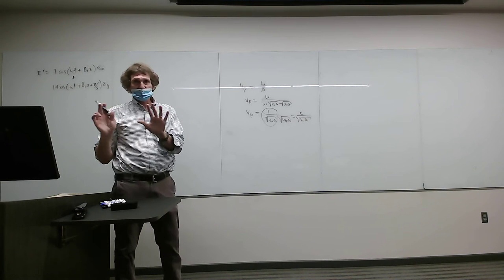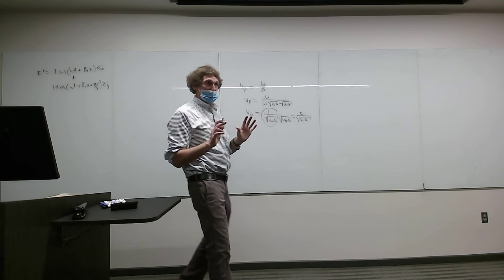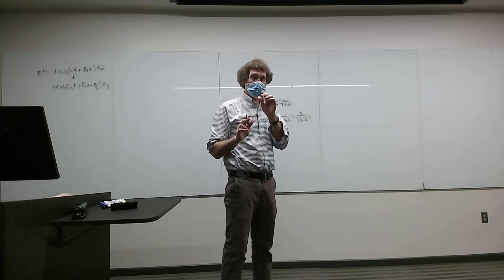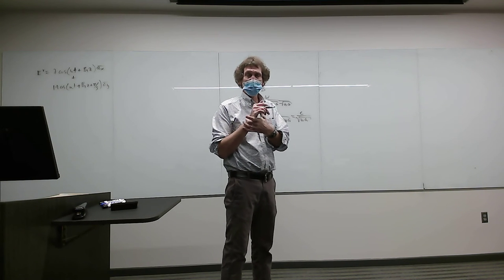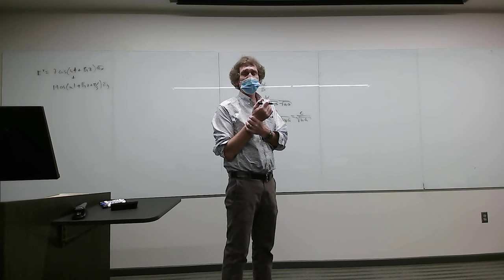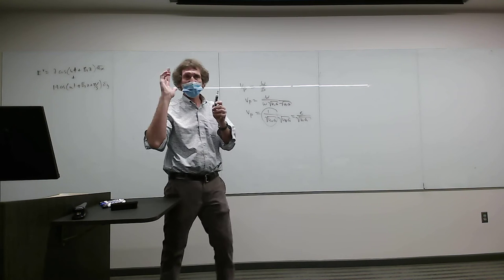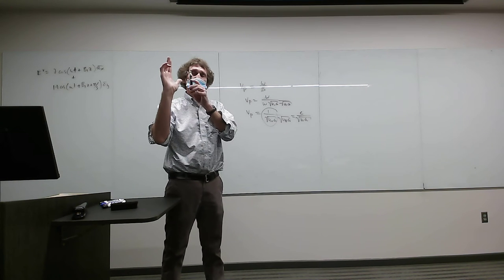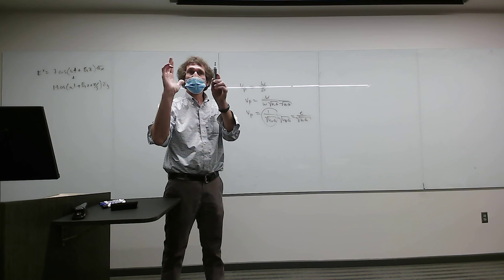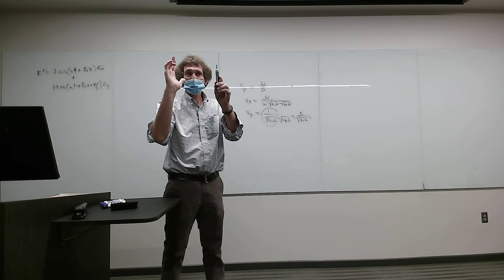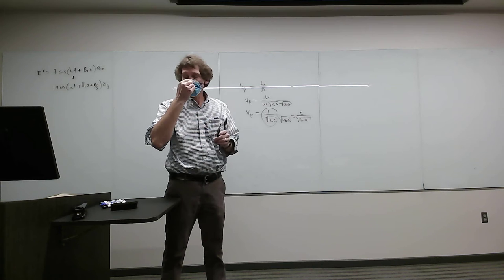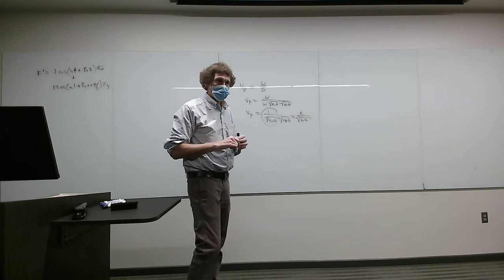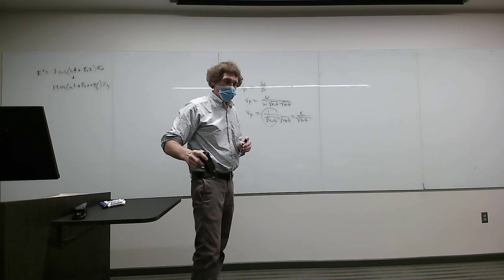We're almost done with chapter six — we still have oblique incidence. Before that, I want to cover something not quite in the textbook: what happens when a wave from free space hits a planar region that's not free space and then comes out the other side? How do you find the transmission and reflection coefficients for that problem? This is the beginning of shielding.